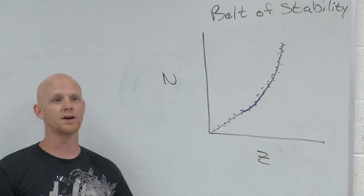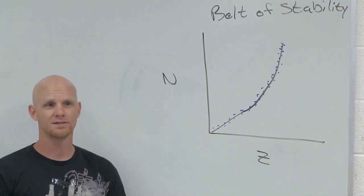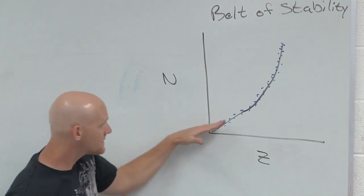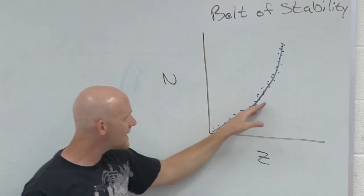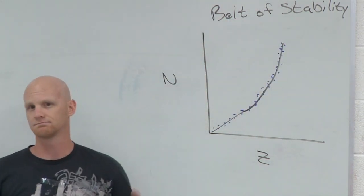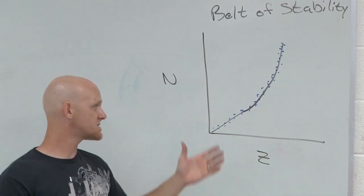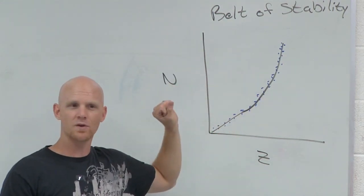Because up to atomic number 20, what do you want your N over Z ratio to be? 1 to 1. But then it starts drifting upward to a slight excess of neutrons once you get higher than atomic number 20. So that's your belt of stability. It goes back to that N over Z ratio.